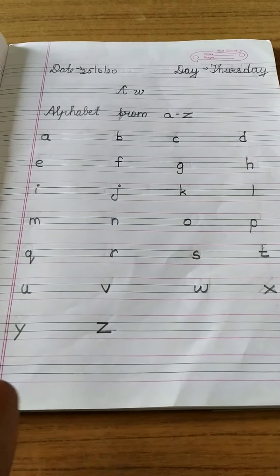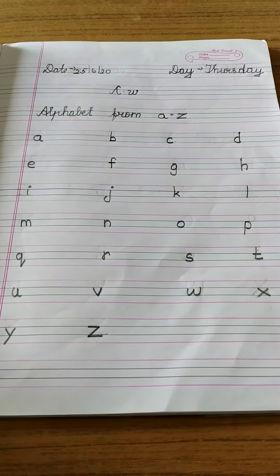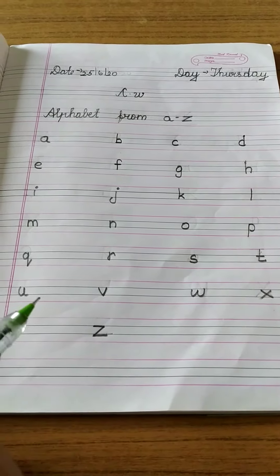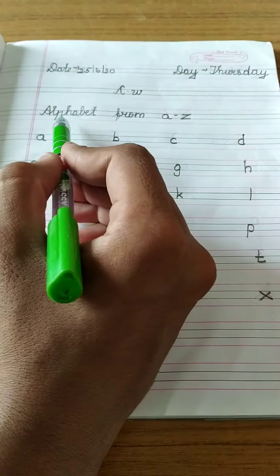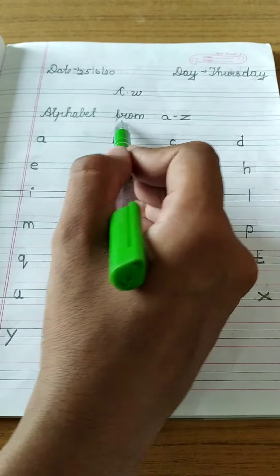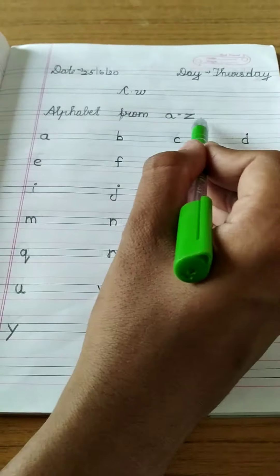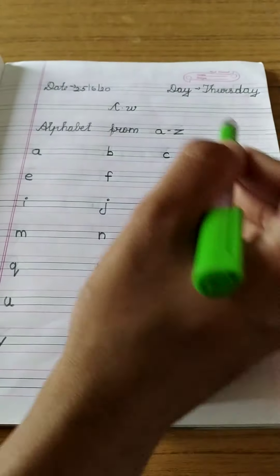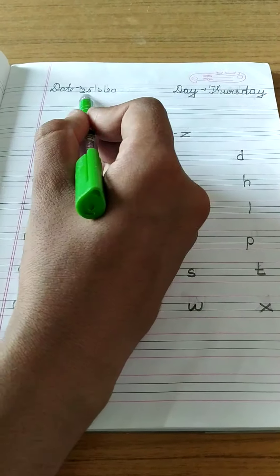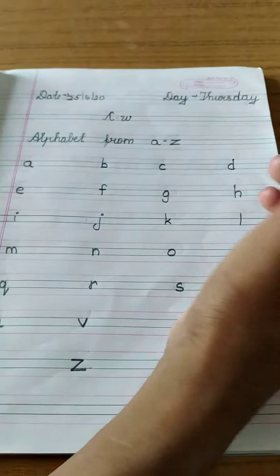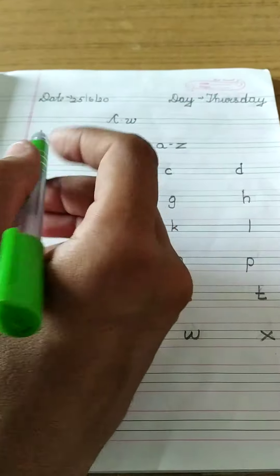Hi students, good morning to everyone. Today in this class you are going to learn alphabet from A to Z. This is small alphabet. Write today's date. Let's start.